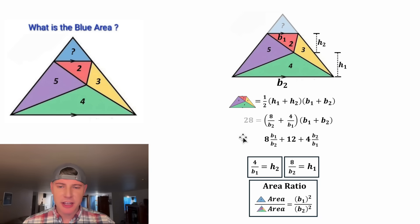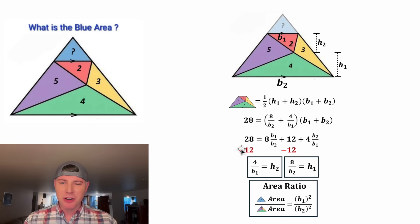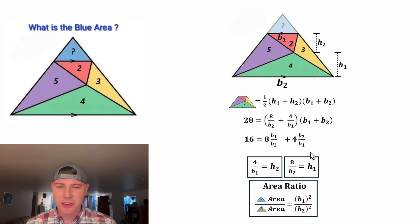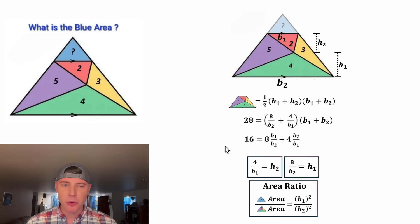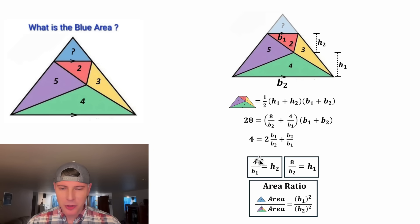Let's bring down the 28. Next, let's get rid of this 12 by subtracting 12 from both sides. On the left-hand side, 28 minus 12 is equal to 16, and on the right-hand side the 12 and negative 12 cancel. We can simplify further — each of these coefficients is divisible by 4, so let's divide everything by 4. 16 over 4 is 4, 8 over 4 is 2, and 4 over 4 is 1. And now this is fully simplified.